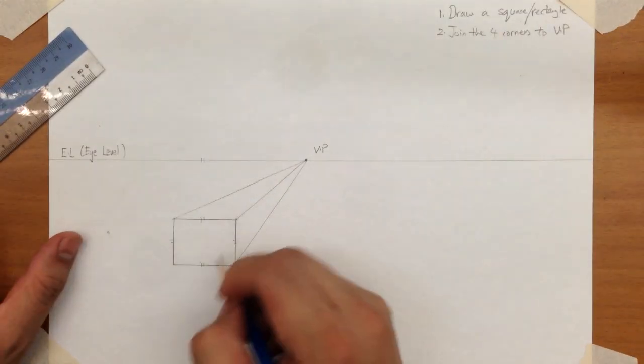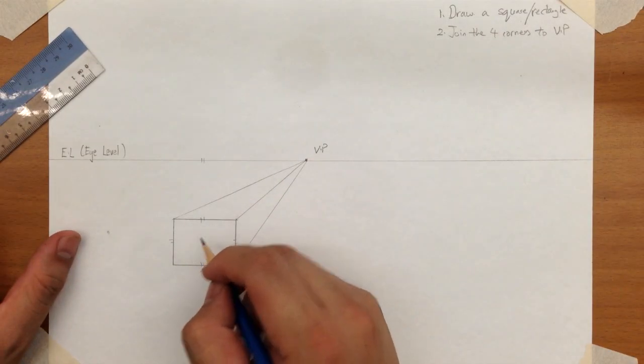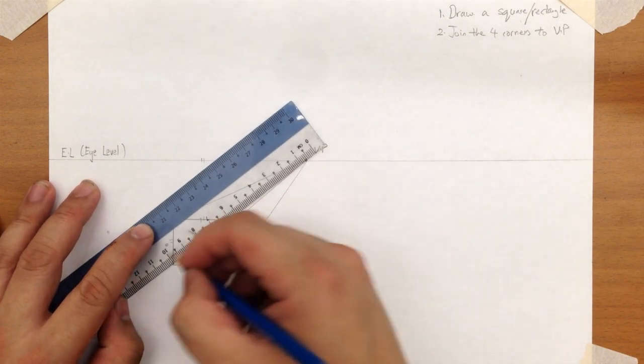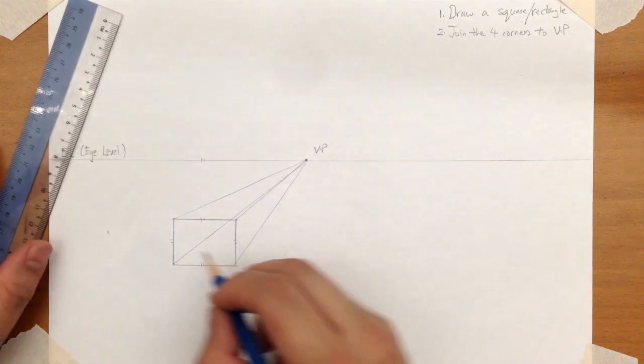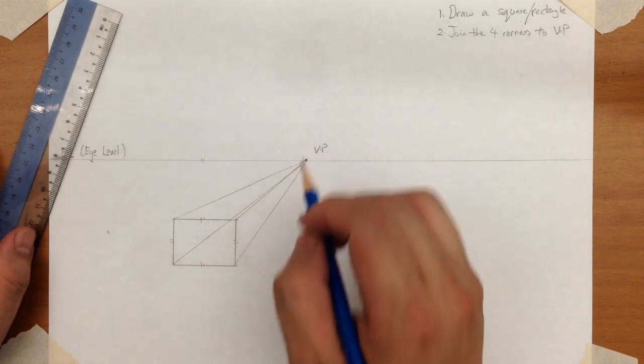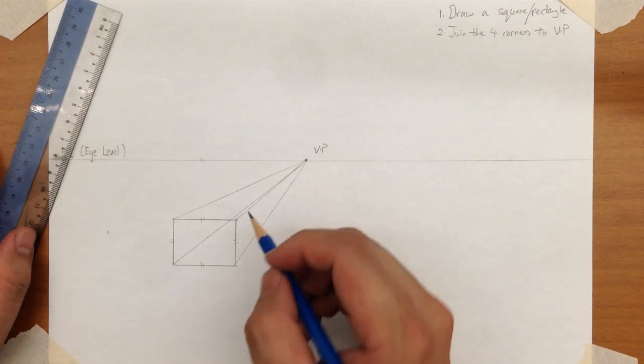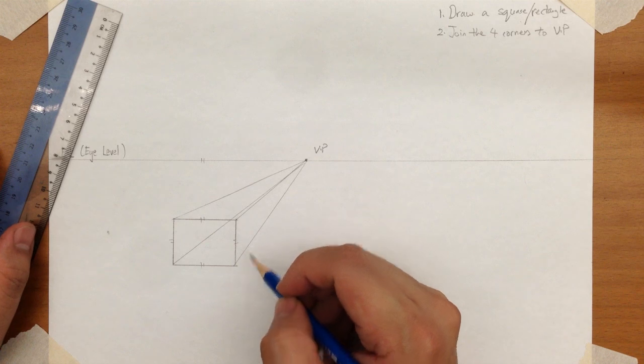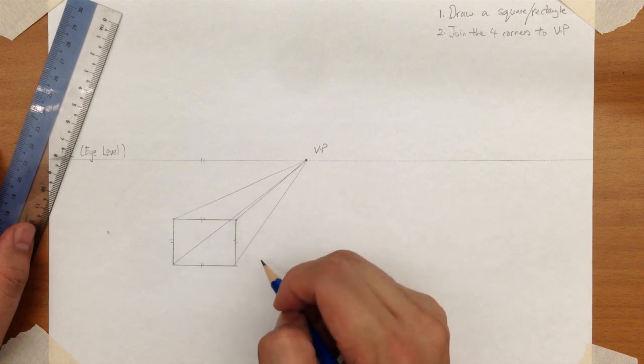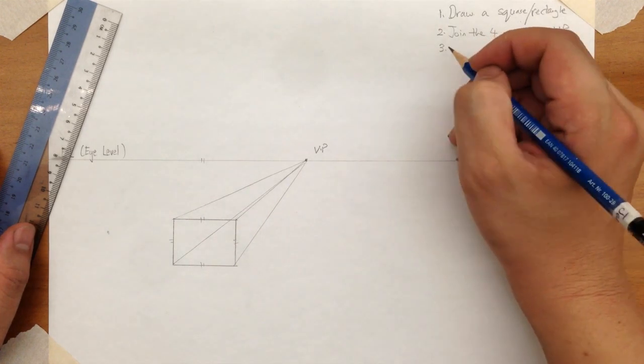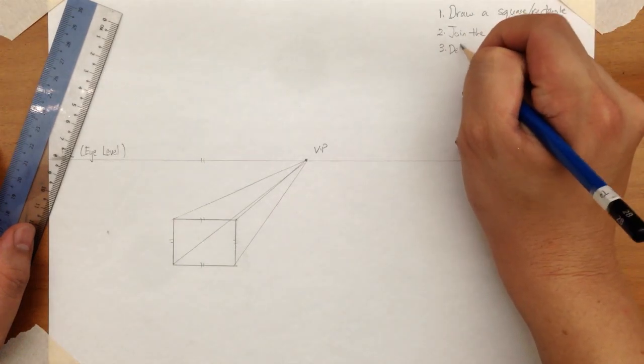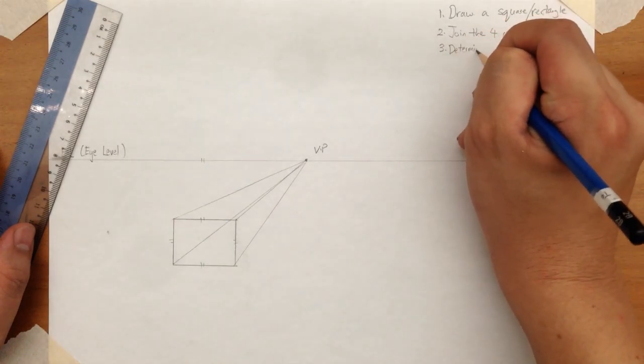Now, once you have the side, the front side. After drawing the four lines from the corners to the vanishing point, you should see that based on this, you can see the right hand side and the top. So now the box is almost done. Which leaves us with the last step.